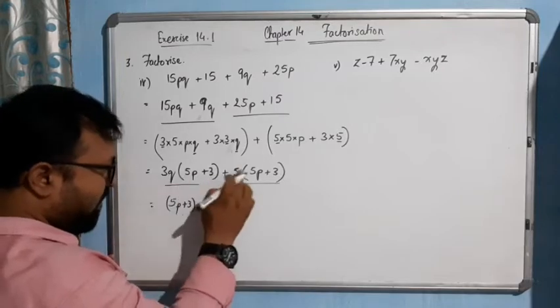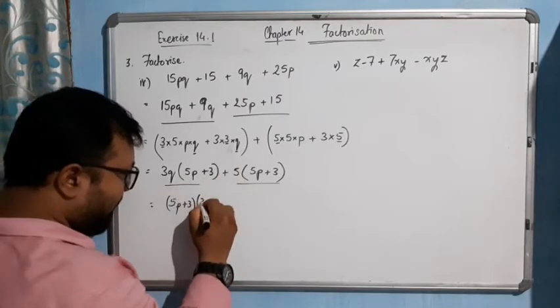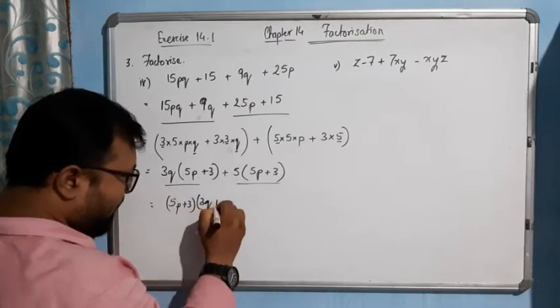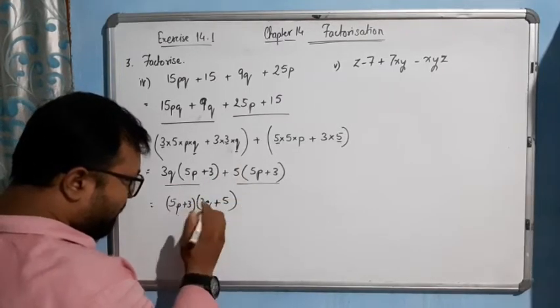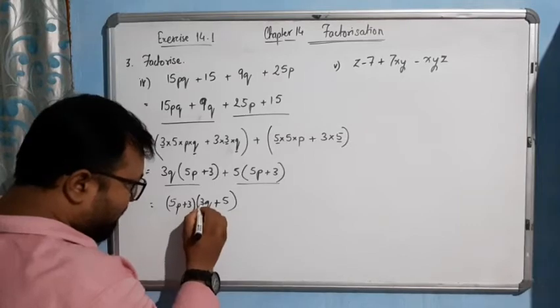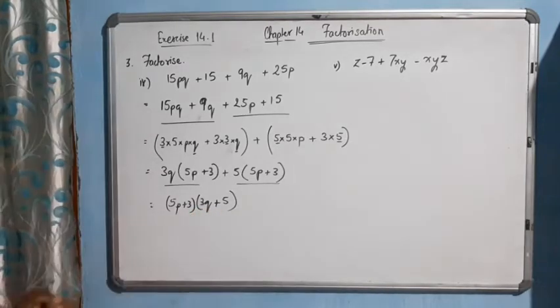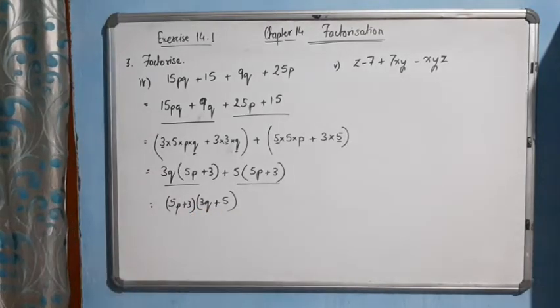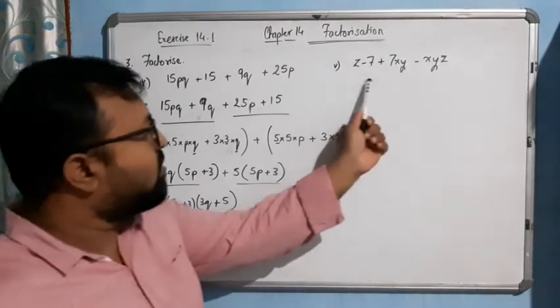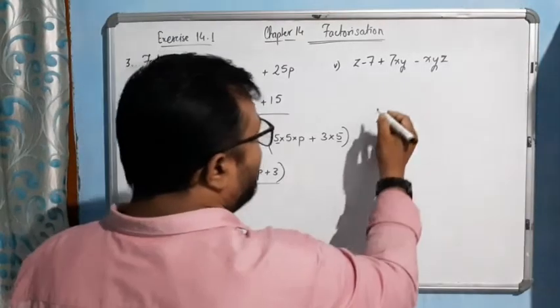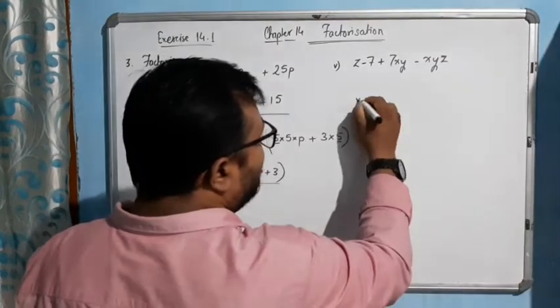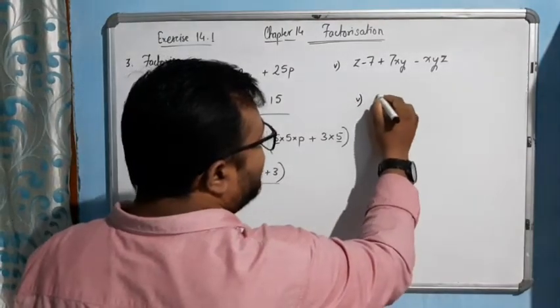Ultimately 3Q plus 5 will be left behind. So the answer is (5P plus 3)(3Q plus 5). Is that clear? Now come to this next part — it is very simple, you can simply find it out.